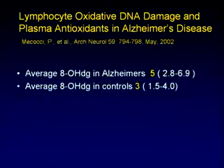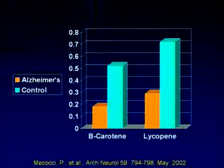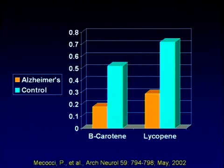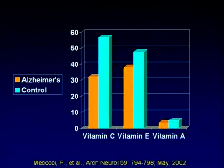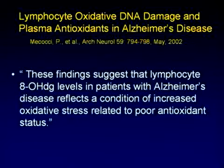If you look at damage to the DNA, which we measure with 8-OHDG — offered by laboratories — the average 8-OHDG, or DNA damage from free radicals in Alzheimer's, is 5 compared to 3 in controls. Why is that? Perhaps Alzheimer's patients have lower levels of antioxidants — and indeed that's absolutely true. They have lower levels of various types of antioxidants compared to control populations, even looking at vitamin C and vitamin E. These findings suggest that lymphocyte 8-OHDG DNA damage in Alzheimer's disease is a result of increased oxidative stress related to poor antioxidant status. Simply stated, the DNA damage happening in Alzheimer's patients is because their antioxidants are not up to snuff.